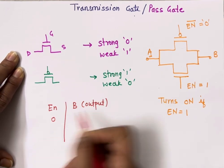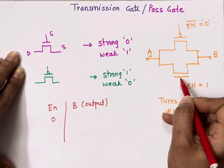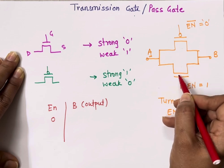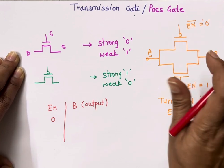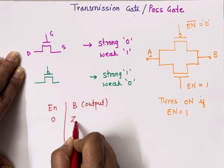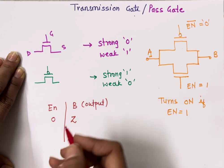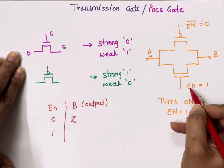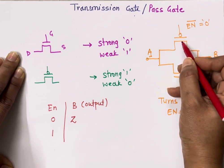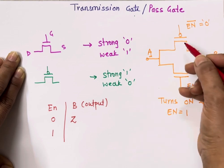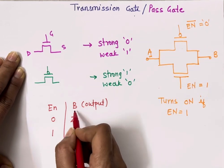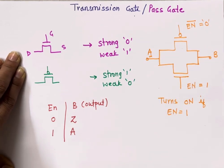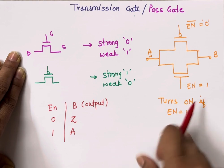If enable is equal to zero, this NMOS will receive zero and remain off; PMOS will receive one and also remain off. Both act as open circuit, so the output becomes high impedance — no output. When enable is equal to one, NMOS turns on as well as PMOS turns on, and the signal passes from input side to output side, so output B equals A.